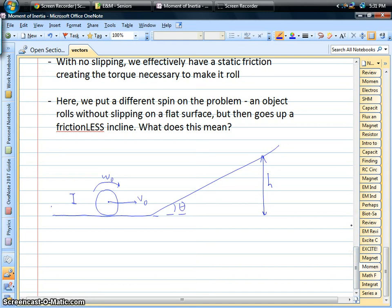And we run into things like, if we need to find out how high it goes on the hill, we can just use energy. We can say at the bottom of the hill, you have a certain amount of translational kinetic energy, and you have a certain amount of rotational kinetic energy, and by the time you get up to the top of the hill, at your highest point, everything stops moving, both linear and rotational, and so that all goes into potential energy.